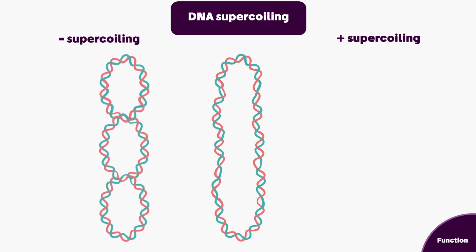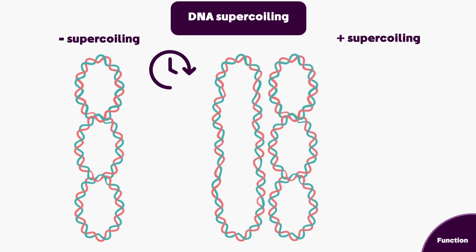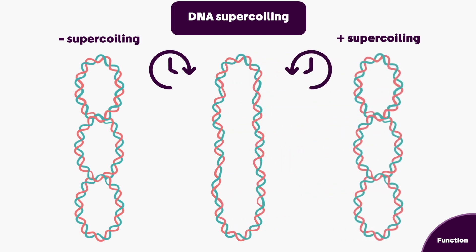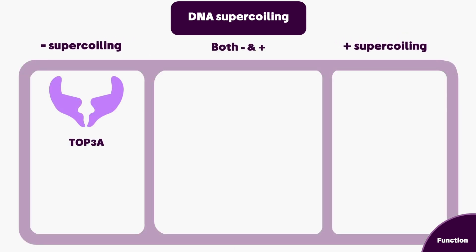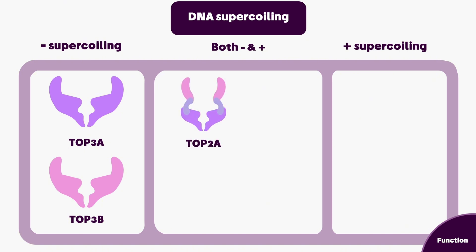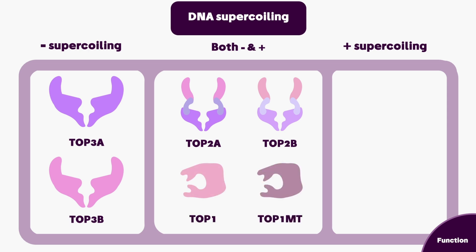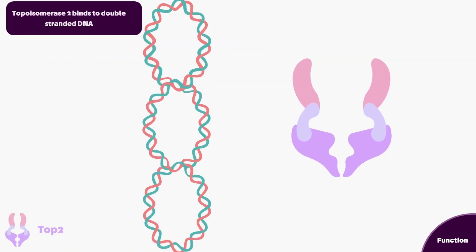Let's briefly review the types of DNA supercoiling. Negative supercoiling is clockwise directional coiling of the DNA, while positive supercoiling is anti-clockwise directional coiling. Enzymes that unwind negative supercoiling include two isoforms: topo 3. Enzymes that work on both negative and positive supercoiling include topo 2a and topo 2b. For single-strand-based relief of supercoiling, there is nuclear topo 1 and mitochondrial topo 1.